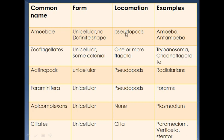Summary of locomotory structures: amoeba have pseudopods, zooflagellates have flagella, actinopods have ray-like pseudopodia, foraminifera have pseudopodia, apicomplexans are parasites with no locomotory structures, and ciliates have cilia. Examples include: amoeba (Amoeba, Entamoeba), trypanosoma for zooflagellates, radiolarians for actinopods, foraminifers, Plasmodium for apicomplexans, and Paramecium, Vorticella, and Stentor for ciliates.